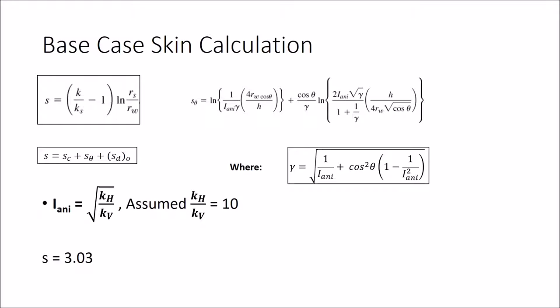To calculate for our base case skin, we had to use the following equations, and we also had to assume that our horizontal permeability is 10 times of that of our vertical permeability, and we ended up having a skin of a little bit over 3.